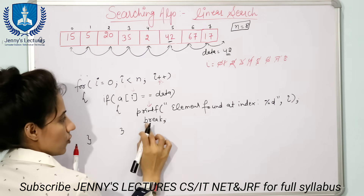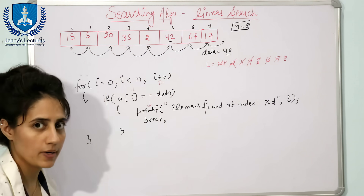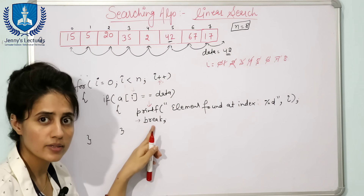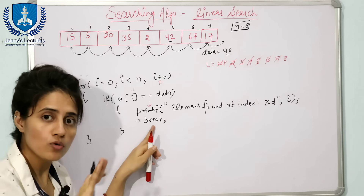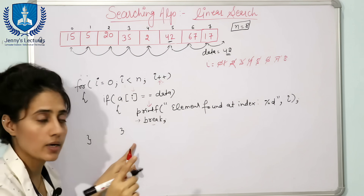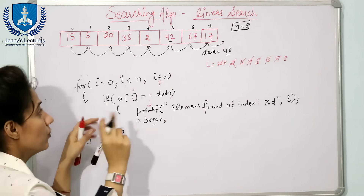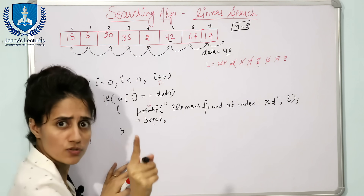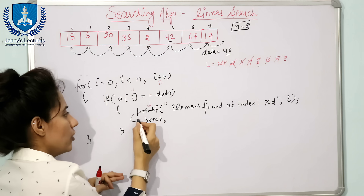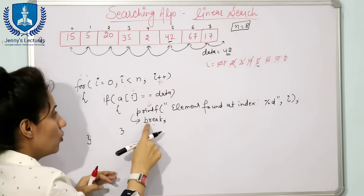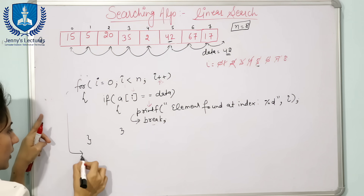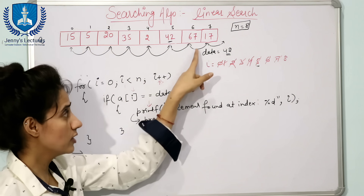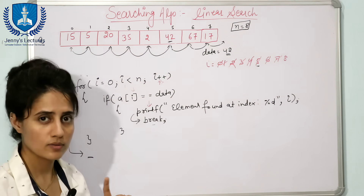After the printf, we write 'break', then close the if statement. The break statement means: as soon as control reaches the break, it exits the loop in which the break is written — our for loop. So when we find the data at index 5, break exits the loop immediately and we will not search for the 6th or 7th location. This is the stopping condition.